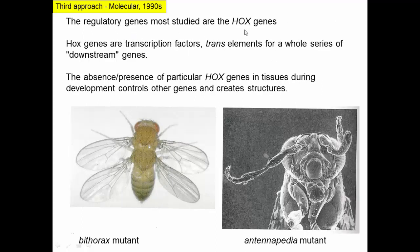The regulatory genes studied most are Hox genes — these are trans factors or transcription factors for a whole series of downstream genes. The absence or presence of particular Hox genes in tissues during development controls many other genes. The bithorax mutant demonstrates this: normally these flies don't have a second pair of wings, but with this mutation, Hox genes being expressed differently in part of the body activates all the genes to make a second pair of wings. Similarly, the antennapedia mutant shows that when the trans factor normally expressed in the leg-forming region is expressed in the head, you see legs grow out of the head where antennae would be. All the genes that make legs are present in all cells of the body — they're just activated by these trans elements in the wrong location.